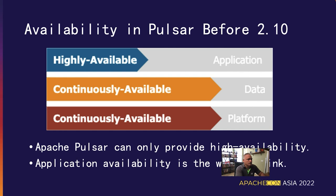Prior to the 2.10 release of Pulsar, we were able to only provide continuous availability at the platform and data level. Pulsar's geo-replication mechanism allows replicating data across multiple geographical regions, ensuring data is continuously available even in the event of a regional failure. Similarly, Pulsar's platform architecture supports multiple clusters spread across different geographical regions, allowing a completely available Pulsar cluster to be ready in the event of a regional failure. The one missing piece was the application layer — it could only achieve highly available status, not continuously available, making it the weak link in the chain.